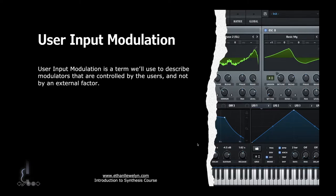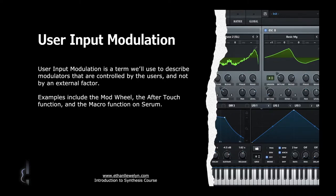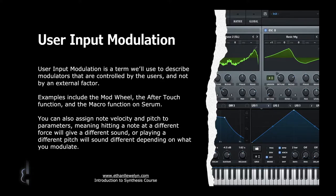Let's move on to user input modulation. This is a term we'll use to describe modulators that are controlled by the user and not by an external factor. Examples include the mod wheel, aftertouch, and the macro function on Serum. You can also assign note velocity and pitch to different parameters, meaning that hitting a note at a different force will give you a different sound, or playing a different pitch will sound different depending on what you modulate.